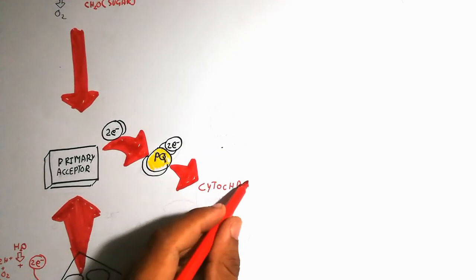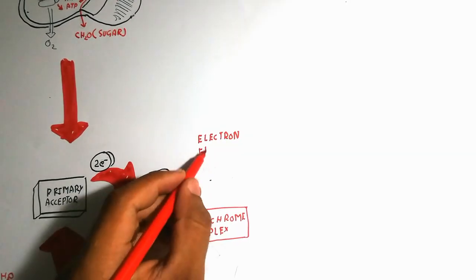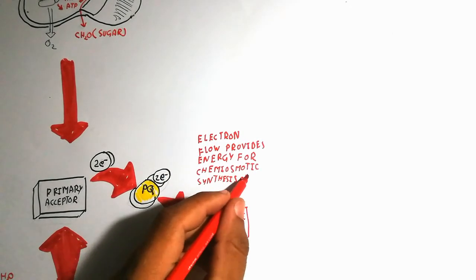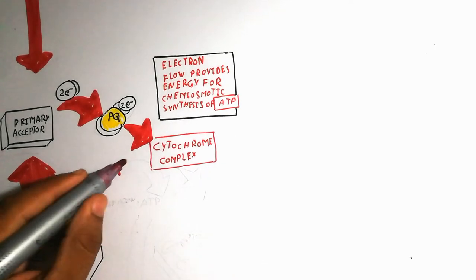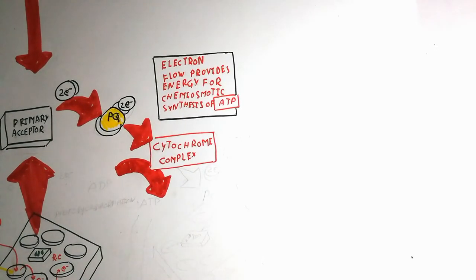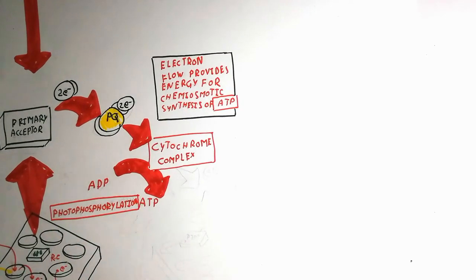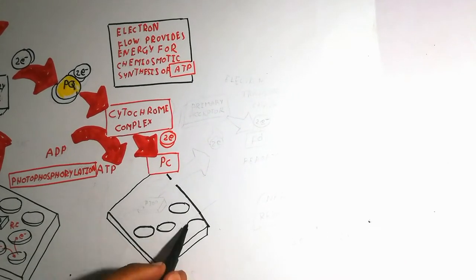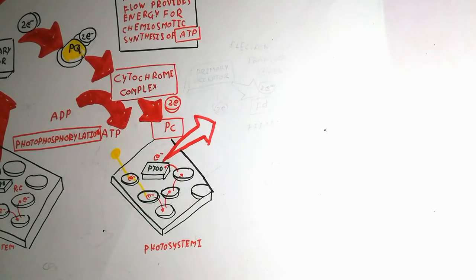Plastoquinone carries the electrons to the cytochrome complex, a protein with enzymatic activity that produces ATP from ADP. The electron flow provides energy for the chemiosmotic synthesis of ATP — this is known as chemiosmosis. Chemiosmosis involves movement from higher to lower concentration, producing ATP from ADP; because photons drive the phosphorylation, this is called photophosphorylation. Electrons then transfer to plastocyanin and on to Photosystem I, which absorbs light at 700 nm.